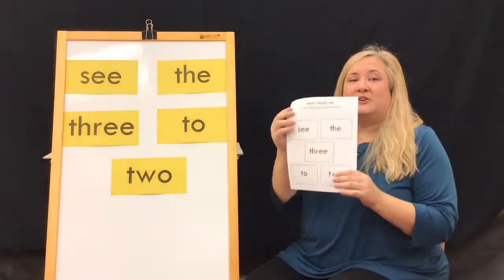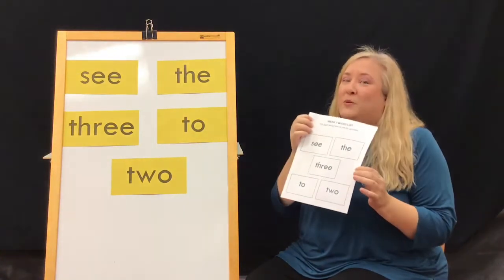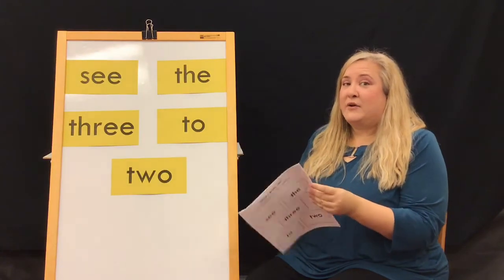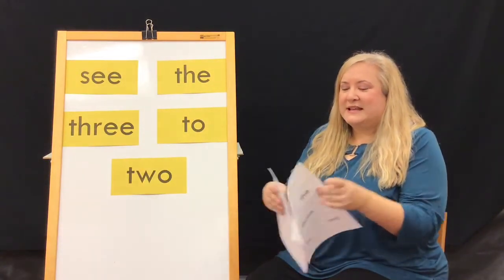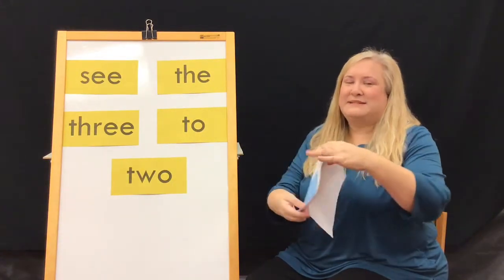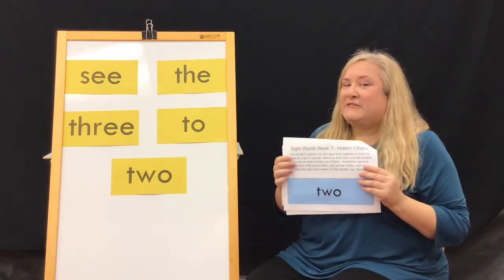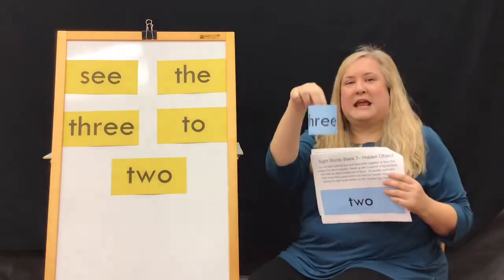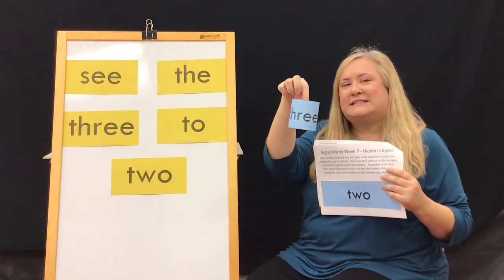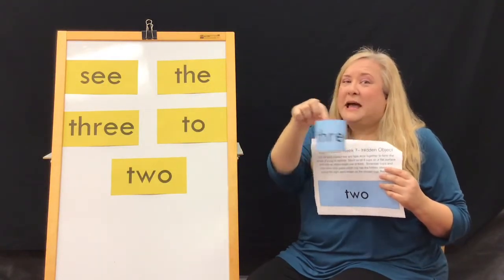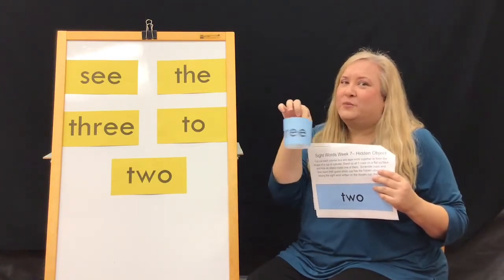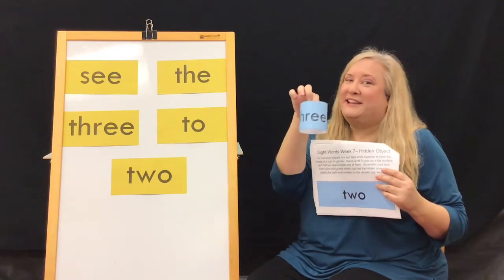I hope everybody went to their library, picked up their week seven packet, which includes all of our sight word cards to cut out and practice, and a game. This game is called Hidden Objects. So what I'd like everybody to do is cut out all of our sight words and tape or glue them together to look like this, make little cups. Hide an object in one of them and circle the cups around to see if you can find which sight word is hiding the hidden object.